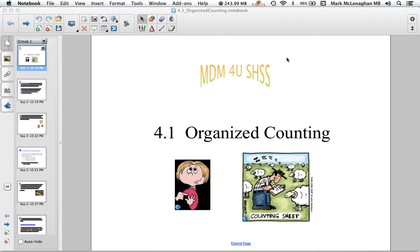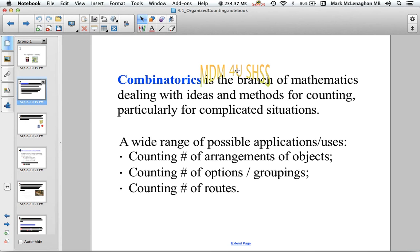Counting, as you've seen before, is counting objects to know how many you have, like counting your fingers when you learn to add and subtract. The branch of mathematics we'll be studying is called combinatorics. It deals with ideas and methods for counting, particularly for complicated situations. You can apply counting to a wide range of possible applications.